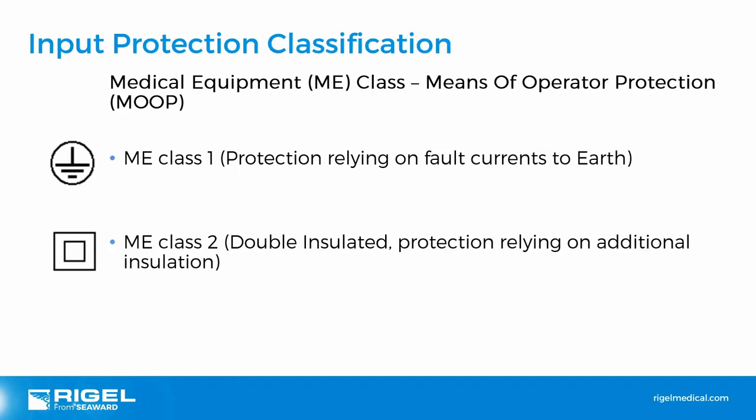Moving on to protection classification. We have means of operator protection (MOOP) with class 1 and class 2 classification — class 1 medical equipment relies on protective earth, and class 2 relies on supplementary insulation, also known as double insulation, which is what the double-box symbol represents.